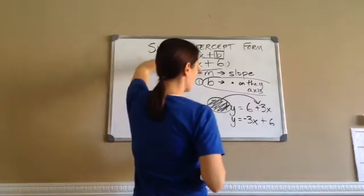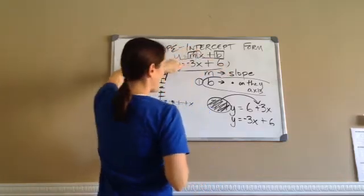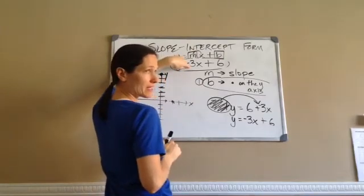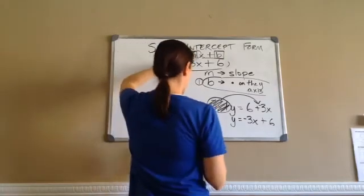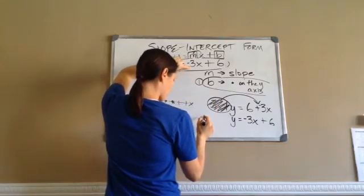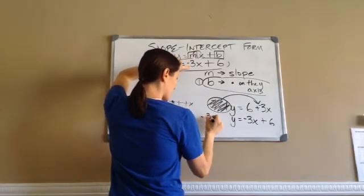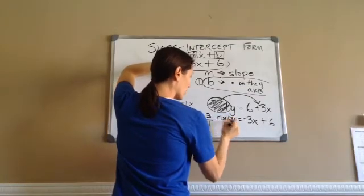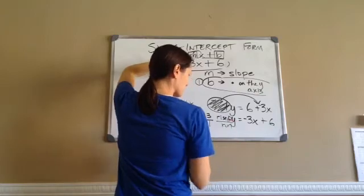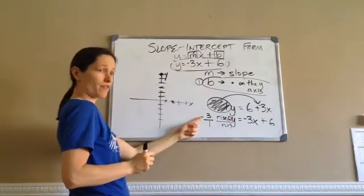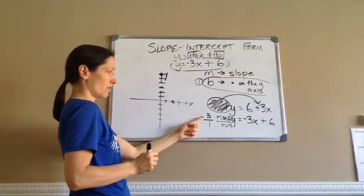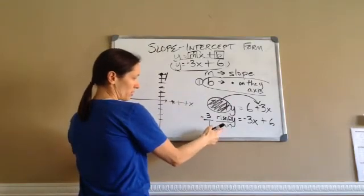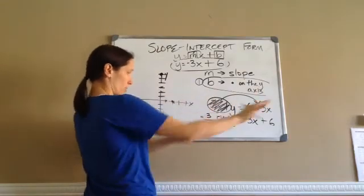Now, what's my m? It's my slope. And remember what to do if it's not a fraction. How do I make this negative 3 a fraction? Negative 3 over 1. So, this is my rise or fall. And this is my run. So, am I going to rise or am I going to fall? You're going to fall. How many? 3. And how many times am I going to run? 1. And it's positive, so we're going to go to the right.